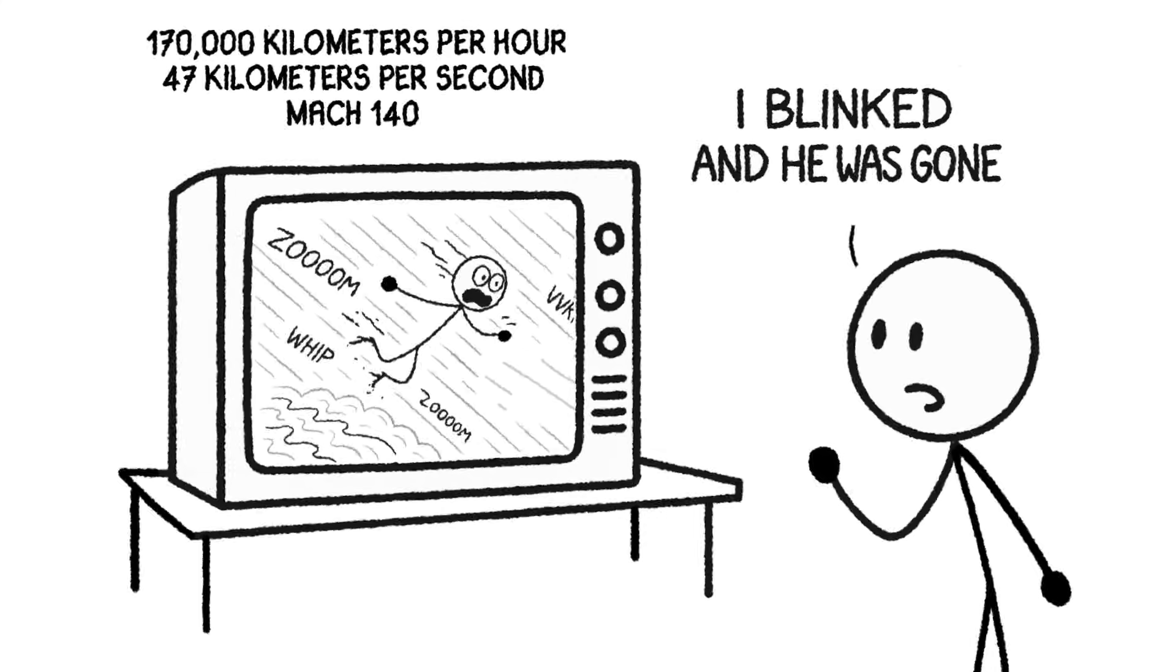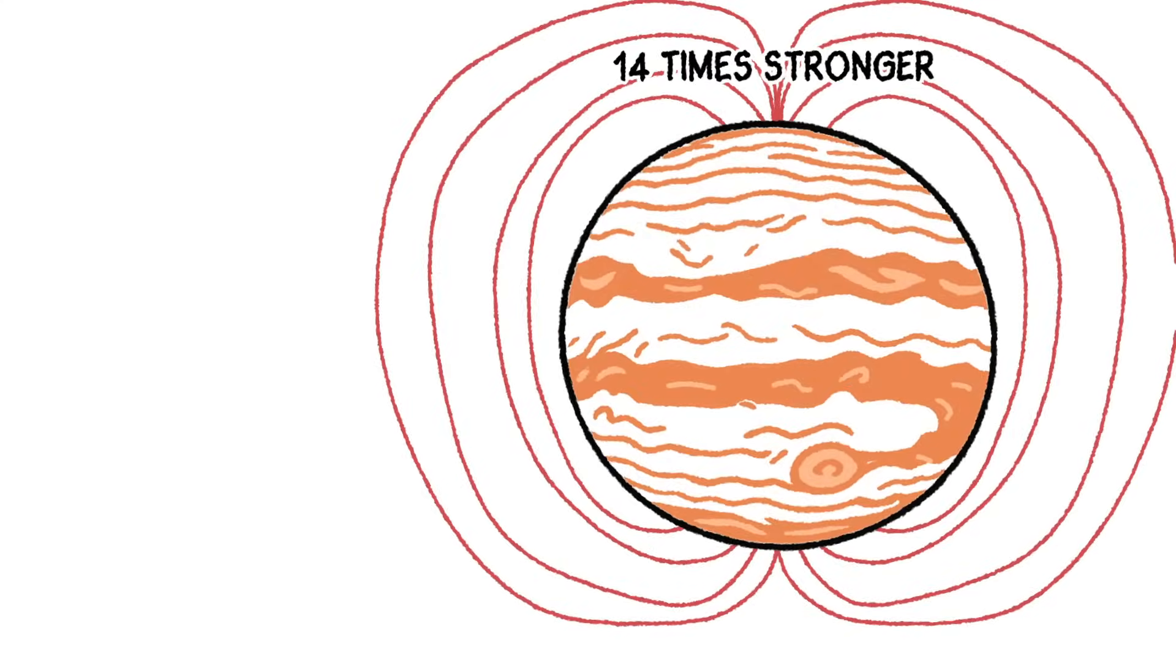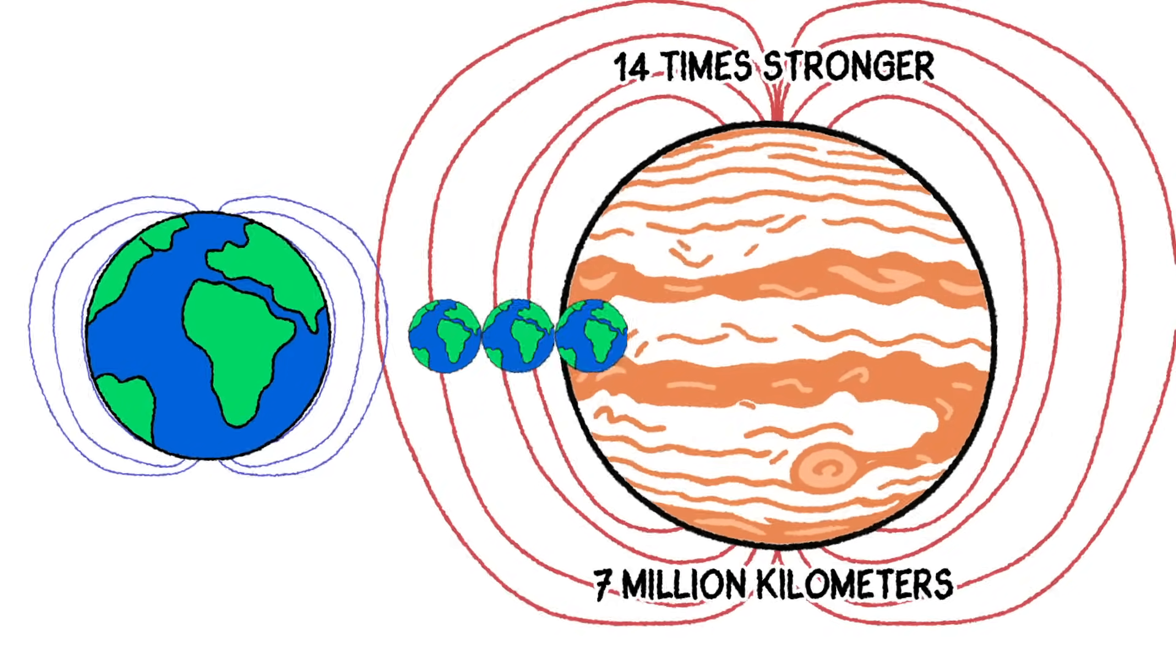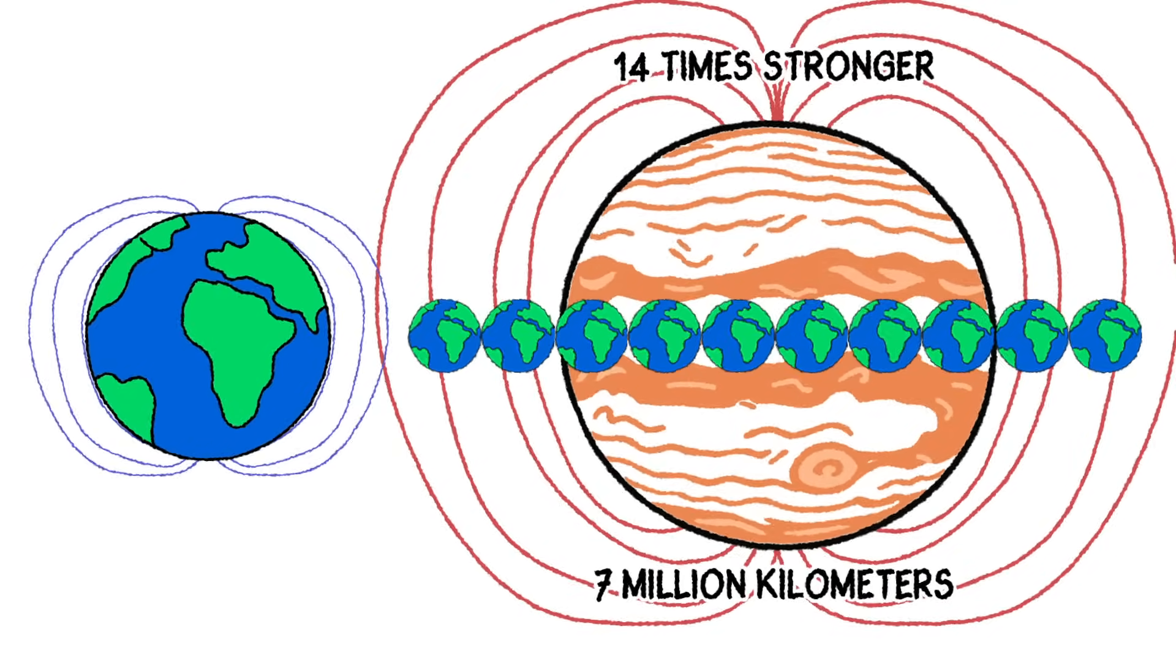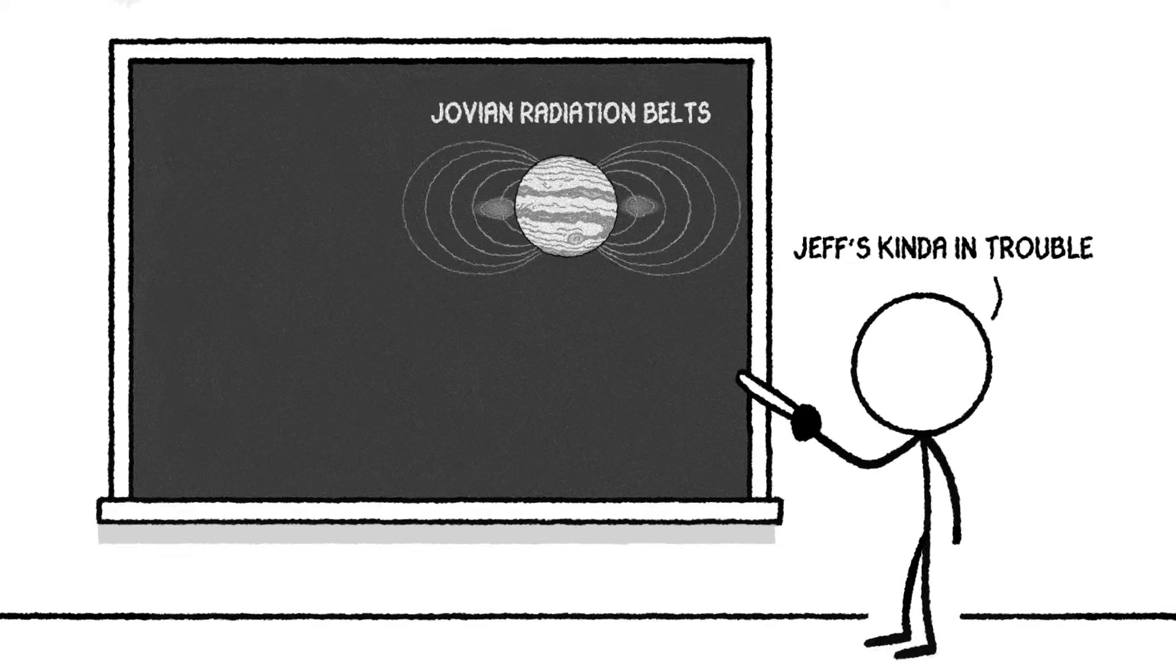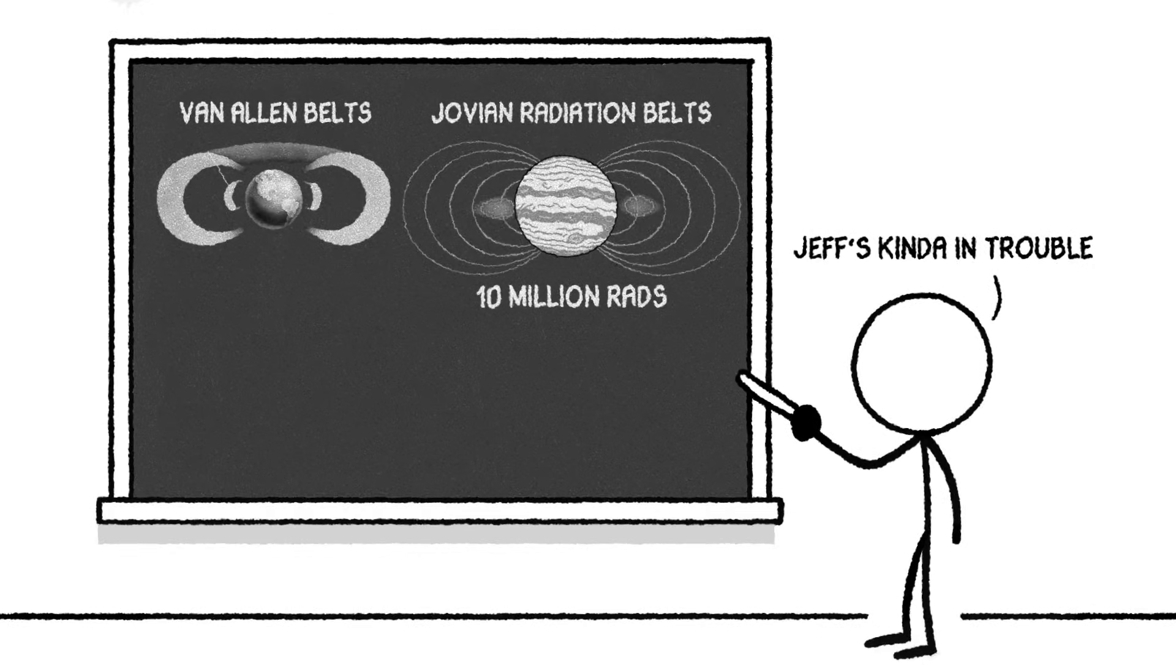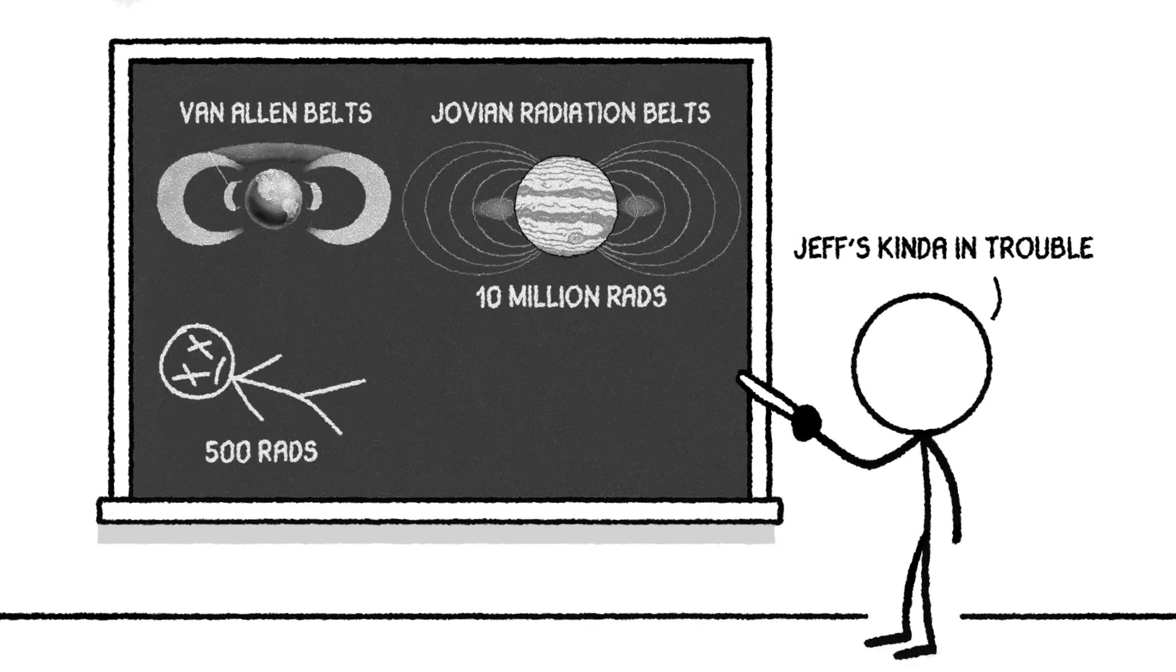Oh, and let's talk about the radiation. Jupiter has a magnetic field that's 14 times stronger than Earth's and stretches out more than 7 million kilometers. That's enough to fit 10 Earths side by side and still have elbow room. It traps particles from the sun and from its hyperactive volcanic moon, Io, creating an absolute horror show of radiation. These are the Jovian radiation belts. Think Earth's Van Allen belts, but on steroids and spun up in a blender. Up to 10 million rads of radiation swirl around in there. And for context, 500 rads will kill you in about a week.